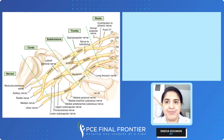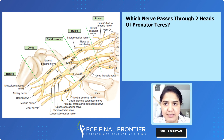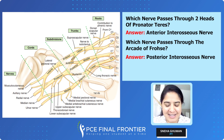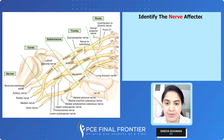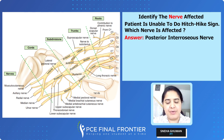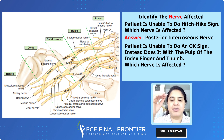Which nerve arises from the ligament of Struthers? Median nerve. Which nerve arises from the two heads of pronator teres? Which nerve arises from the arcade of Frohse? Now, a patient is unable to do a hitchhike sign — which nerve is injured? A patient is unable to do an OK sign tip-to-tip, and instead does it pulp-to-pulp — which nerve is injured? Anterior interosseous nerve.